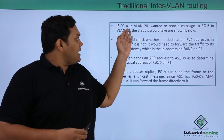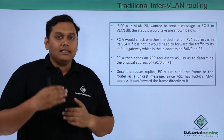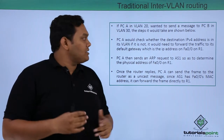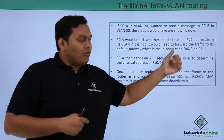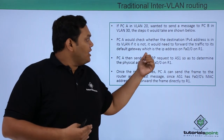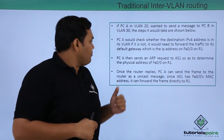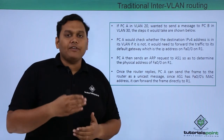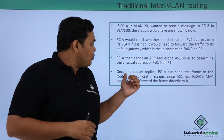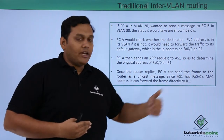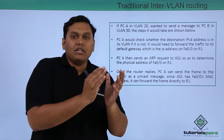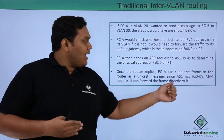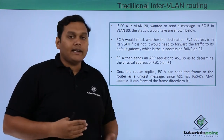PCA in VLAN 20 wants to send a message to PCB in VLAN 30. First, PCA checks whether the destination IPv4 address is in the same VLAN. Since it is not, PCA forwards the traffic to its default gateway, which is the FA0/0 interface of Router 1. PCA sends an ARP request to switch AS1 to determine the MAC address of the FA0/0 interface on Router 1. Once the router replies, PCA sends the frame as a unicast message. Since AS1 has the MAC address available, it forwards the frame directly to R1.